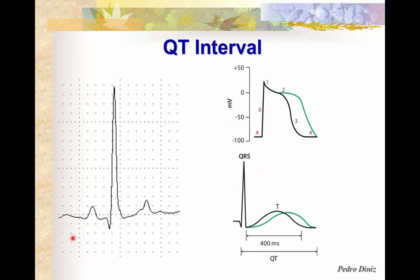The QT interval is defined by the time it takes from the beginning of the QRS complex to the end of the T wave. This period of time is basically the time it takes for the cells to depolarize and repolarize. So the QT interval shows you how long it takes for ventricular cells to depolarize and repolarize.